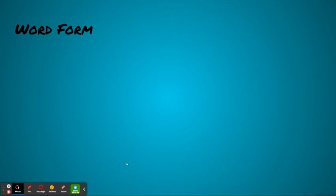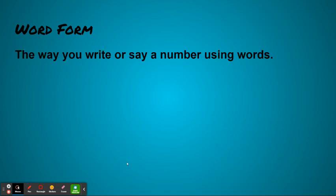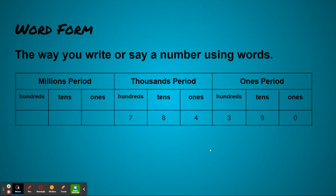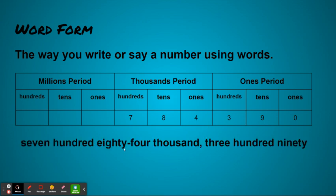Another way I could write that same number is in word form. When you write word forms, you're writing or saying the number using words. Again, I have my place value chart with the exact same numbers, but this time if I was going to write it, I would write seven hundred eighty-four thousand, three hundred ninety.